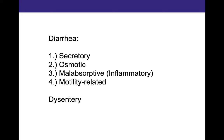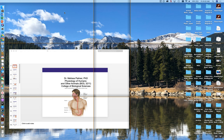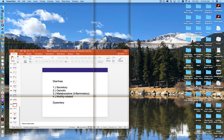Chylomicrons go into the lymphatic system and are ultimately delivered to adipose tissue, which stores the fat. You actually really do need fat in your diet because there are vitamins you can't absorb without it. Bile is amphipathic — spelled A-M-P-H-I-P-A-T-H-I-C.